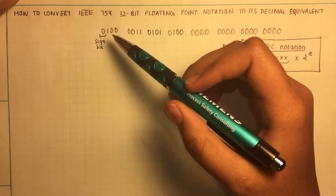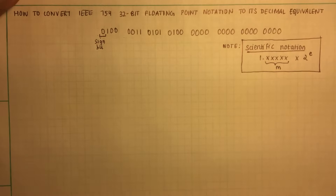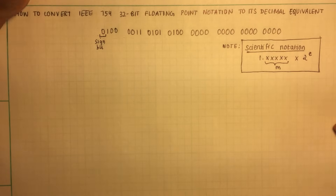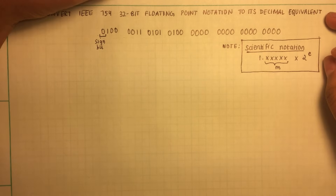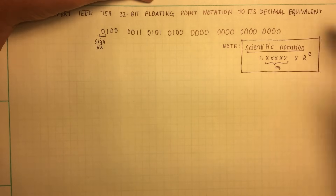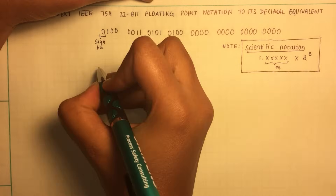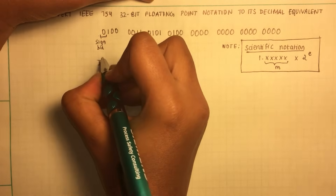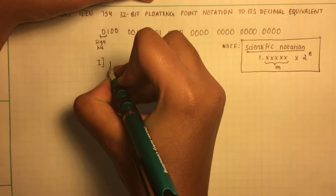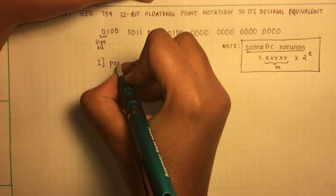If it's one, then the decimal equivalent would be negative. But in this case, we have a positive decimal.